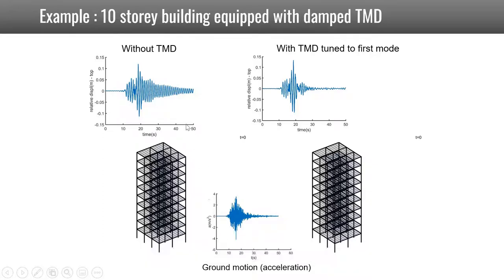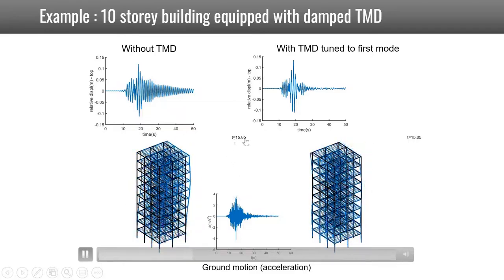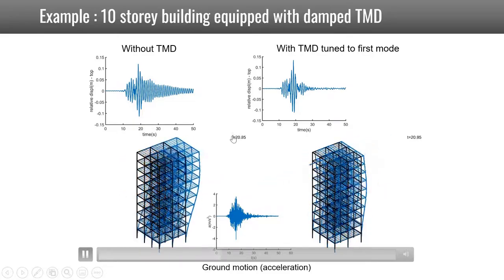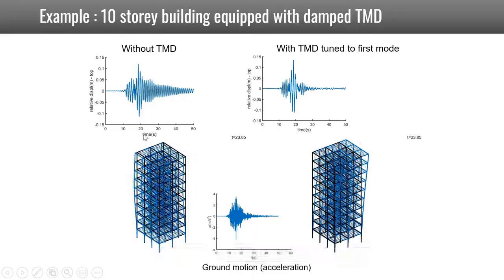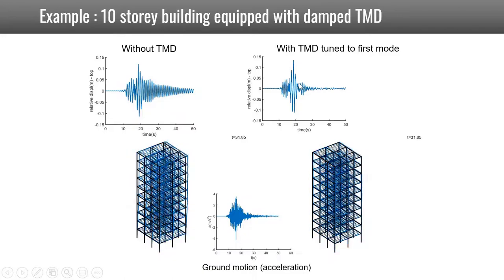This is now an example of simulation where the building is excited by an acceleration given here. This is the Santa Cruz earthquake we already used. The building on the left does not have a tuned mass damper, while the building on the right has a tuned mass damper. For the first 10 seconds, nothing happens because the earthquake has not appeared yet. Here you can see the motion at the top of the building. After 10 seconds, it starts to vibrate in the two cases, and then you see that after the passage of the earthquake, you see here the motion of the TMD.